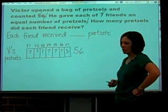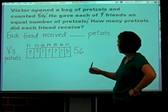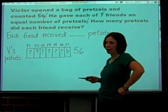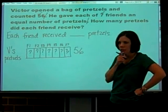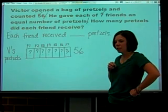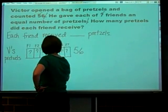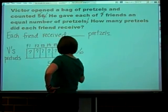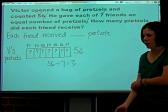So how am I going to solve this now? If I know the total and I know how many groups I have, how am I going to solve this? Divide. And what will my division sentence be? Fifty-six. Okay. I have fifty-six. I'm dividing it into seven groups. I'm trying to figure out how many are in each group. So go ahead and solve that.